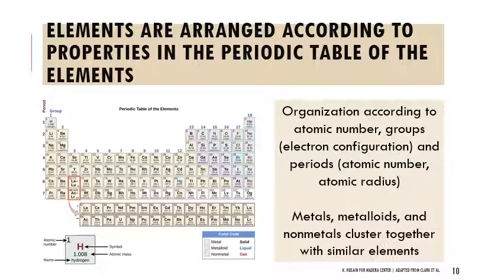When looking at the periodic table, we see some trends, especially in the clustering of metals, metalloids, and nonmetals. These elements are arranged according to their atomic number, sorted into groups based on electron configuration, and sorted into periods based on atomic number and atomic radius. We see those clusters based on the properties of these elements.